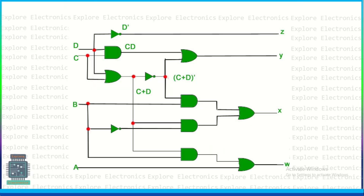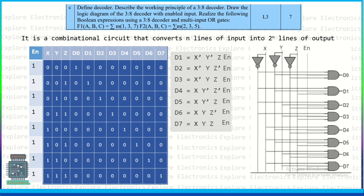Define a decoder and describe the working of a 3-to-8 decoder. The truth table and logic diagram with enable input are shown. The block diagram takes inputs X, Y, Z with an enable input and produces outputs D0 to D7. For example, D1 = X̄ȲZ·Enable. The circuit is drawn using NOT gates and AND gates for all eight output expressions.